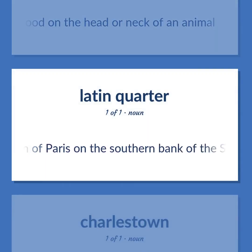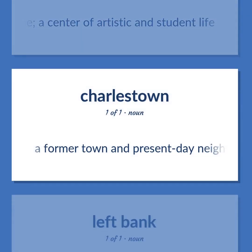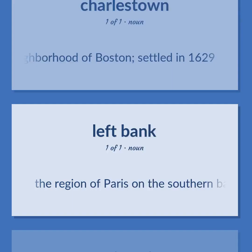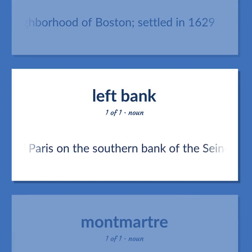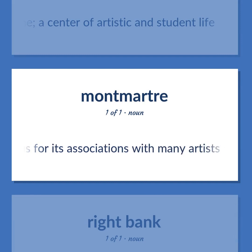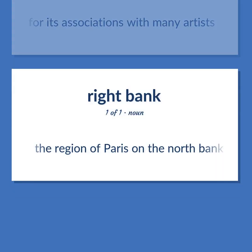Left Bank: the region of Paris on the southern bank of the Seine, a center of artistic and student life. Charlestown: a former town and present-day neighborhood of Boston, settled in 1629. Montmartre: the highest point in Paris, famous for its associations with many artists. Right Bank: the region of Paris on the north bank of the Seine.